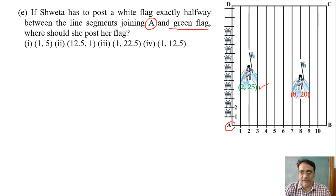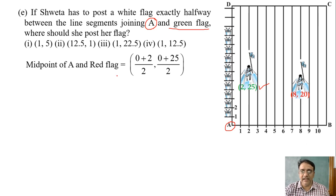So we have to find the midpoint of these two points. Midpoint of A and green flag: 0 plus 2 by 2 and 0 plus 25 by 2. So what we are getting? 1, 12.5. So which option is the correct one? Option 4th option.